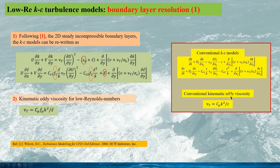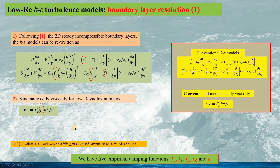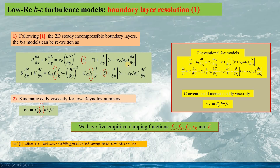Comparing to the conventional kinematic eddy viscosity, we can see the function f_mu here. From this formulation, we have five empiric damping functions: F1, F2, F_mu, Epsilon_0, and E. These are formulated for the low Reynolds number K-Epsilon model.